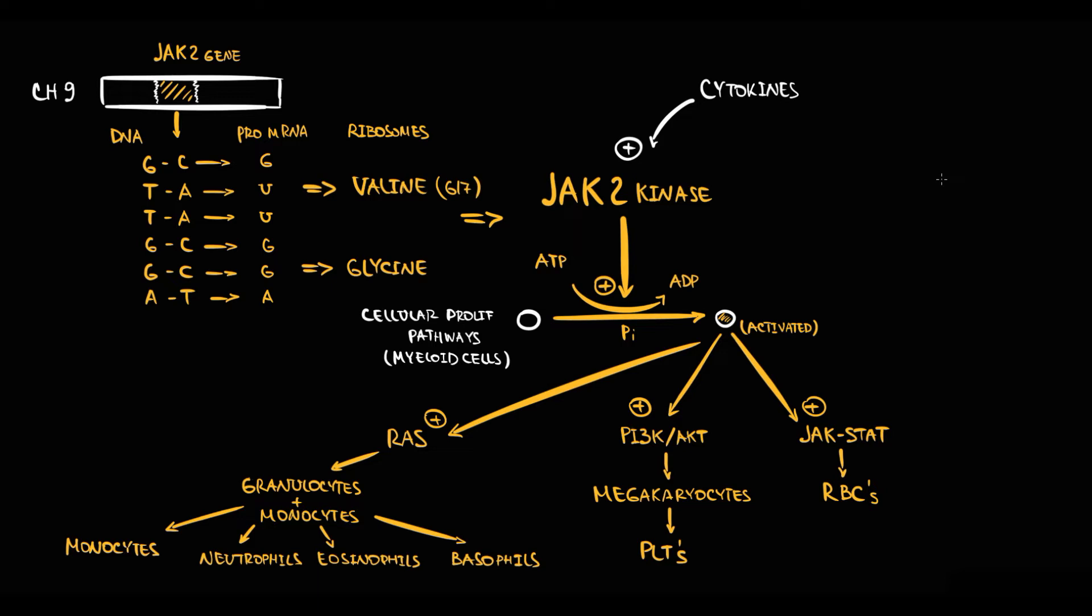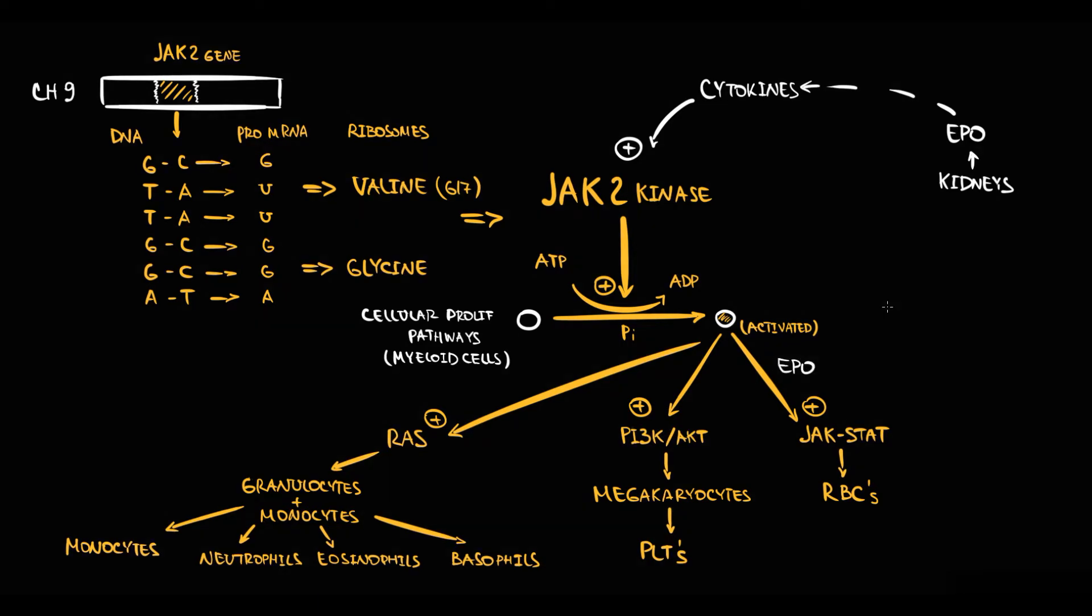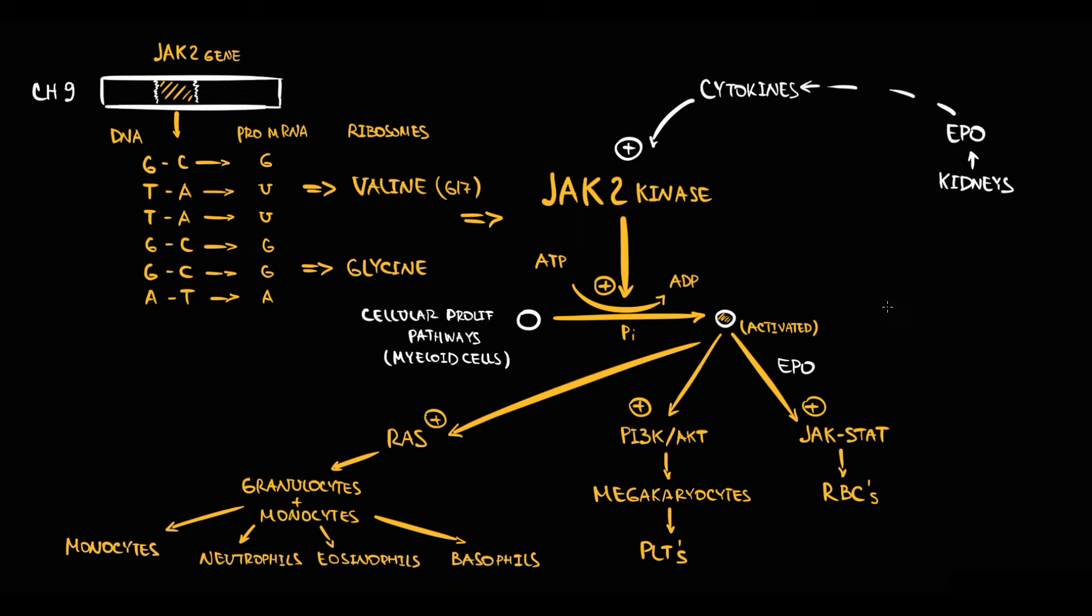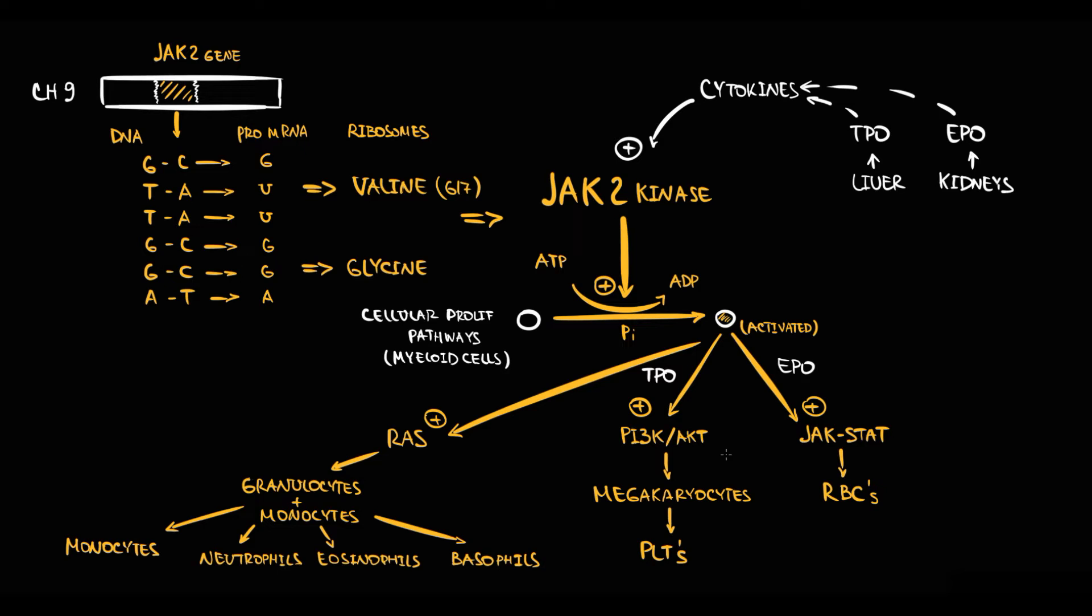We have certain organs that provide selective regulation of blood cell count. For example, kidneys by secretion of erythropoietin mainly provide activation of JAK-STAT pathway, and thereby increase production of red blood cells. So by this they regulate red blood cell level. Liver by secretion of thrombopoietin mainly forces JAK2 kinase to activate PI3K-AKT pathway, that stimulates the production of megakaryocytes through which platelets are formed. So liver regulates platelet level.